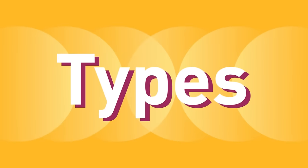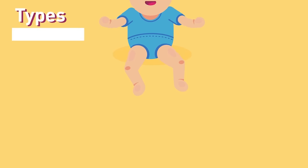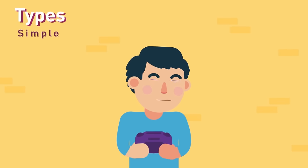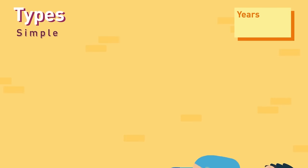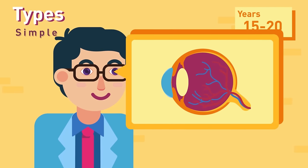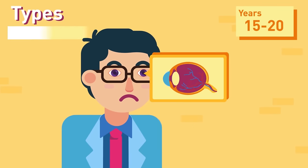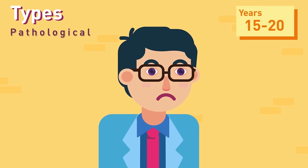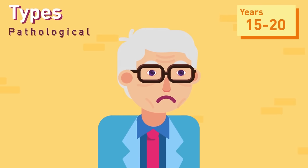Types. Congenital: from birth. Simple: most common — starts from 5 to 10 years till 15 to 20 years and is mostly due to curvature or length problem of the eyeball. Pathological: hereditary, progressive, and is due to degenerative changes in the eyes.